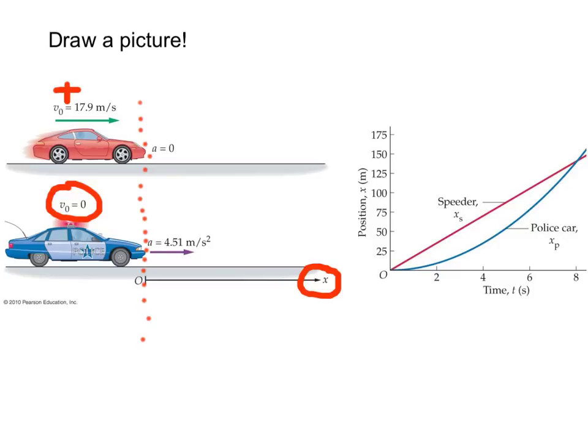And then, our plot shows the linear or diagonal line for the speeder. So the speeder is the red diagonal line. And what Fernando pointed out is the parabolic curve for the accelerating police car.